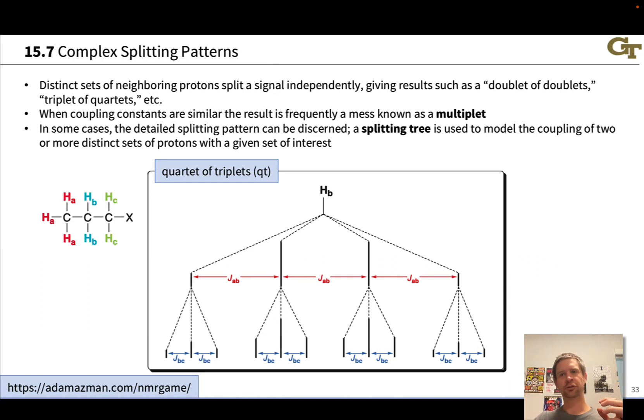For example, if we have a long chain of CH2 groups with two different groups on either end, each CH2 is unique unless there's symmetry in the molecule, and each will exhibit very complex coupling with the neighbors, and we end up with typically a mess of sub-peaks in those CH2 signals. Distinct sets of neighboring protons split a signal independently, giving results like a doublet of doublets, a doublet of triplets, or a triplet of quartets.